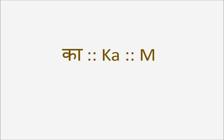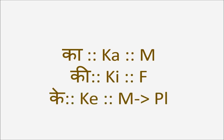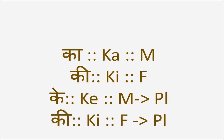Let's proceed to understand them. Ka is used when the thing in use is masculine. When the gender is feminine, you use Ki. When masculine gender is plural in number, Ka turns to Ke, and when the feminine gender turns to plural in number, it still remains Ki.